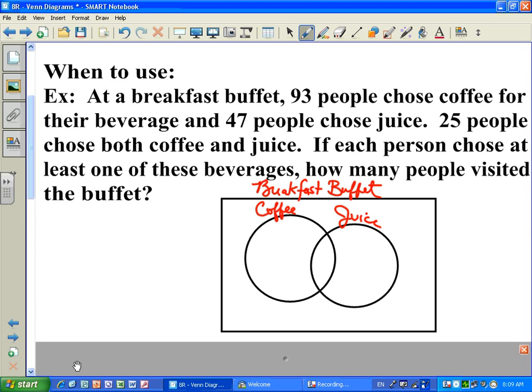Now, the rectangle around the two circles basically represents the universe of all the numbers or students that would partake in the survey. So now, once the entire Venn diagram is labeled, now we just have to plug the numbers into the right spot.